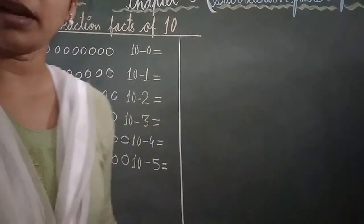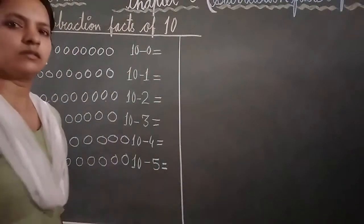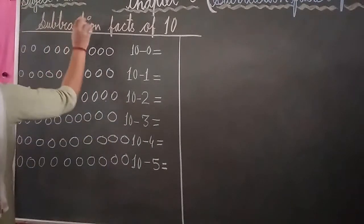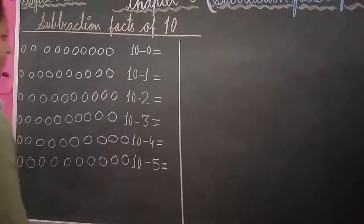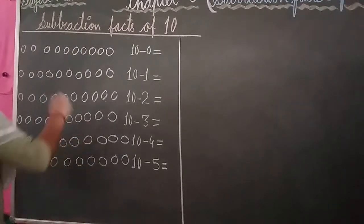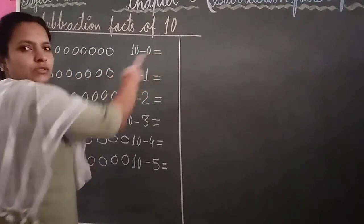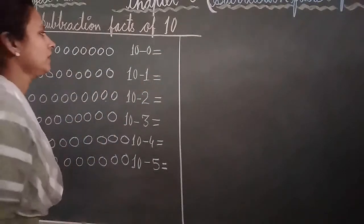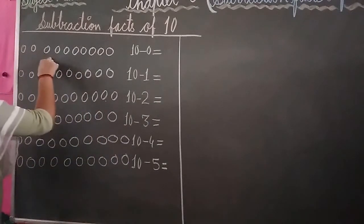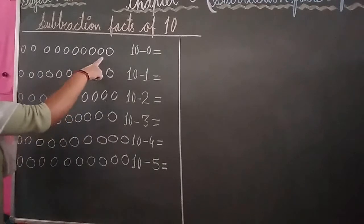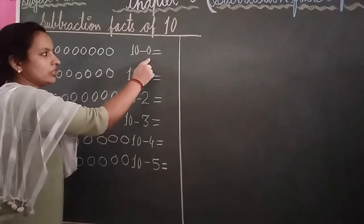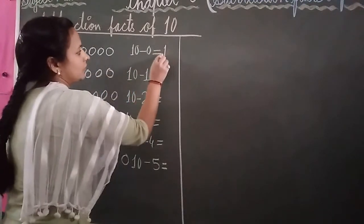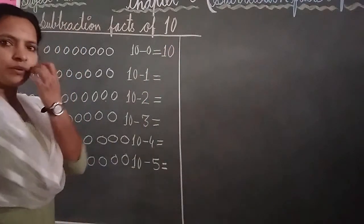Now we come to the next topic: Subtraction fact of 10. The first step is to draw your 10 balls: 1, 2, 3, 4, 5, 6, 7, 8, 9, 10. Write: 10 minus 0 equal to 10. You don't cut any ball, so all 10 remain. 10 minus 0 equal to 10.